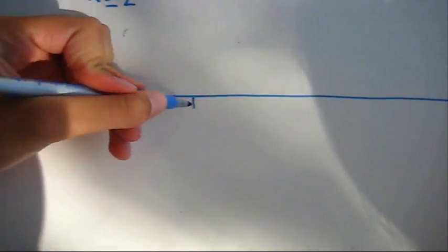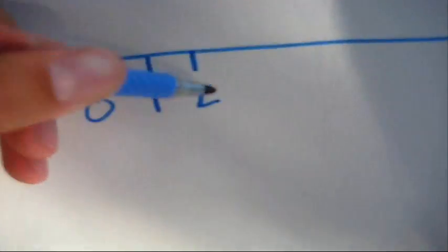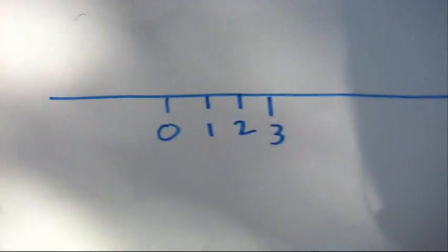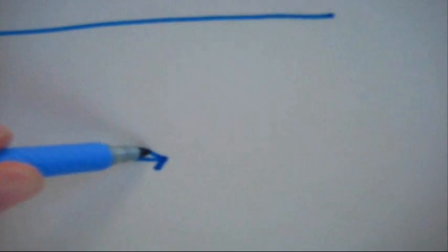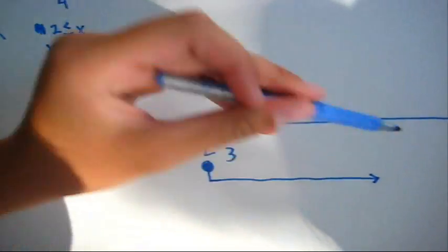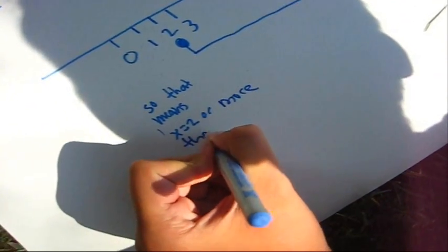When you do a number line, you have to have a line — it's got to have zero and some more numbers. We're going to do one, two, and three. And since x is equal to or greater than two, the circle on two is going to be filled in. Since the arrow is pointing this way, our arrow is going to point this way. That means x equals two or equals more than two.